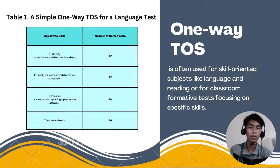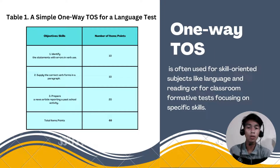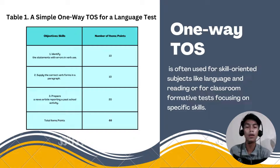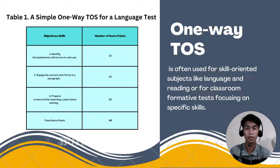A table of specification takes different formats depending on what the teacher wants to show. One of the formats of TOS is the one-way TOS. It is often used for skills or in subjects like language and reading, or for a classroom formatted test focusing on specific skills.